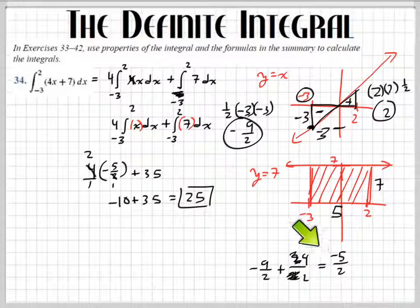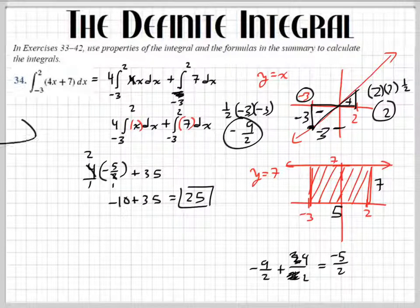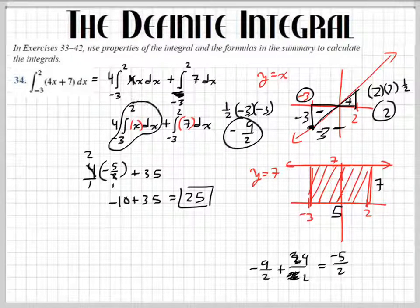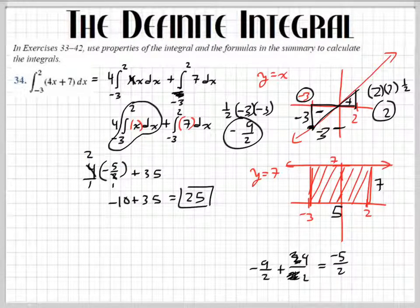And we found common denominators. So we have 4 over 2. We add those together, we get negative 5 over 2. And that's why we have a negative 5 over 2 right here. Because this part right here, this part right here gives us this. Because that part's just the area. But then we have to multiply it by 4. So we do that. Then we add it to 35. That's how we got 25.